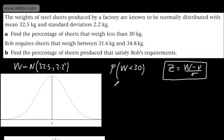So what we're now looking for then is z being less than 30. We take 30, we subtract away from this now 32.5, and we divide by the standard deviation, which is 2.2.